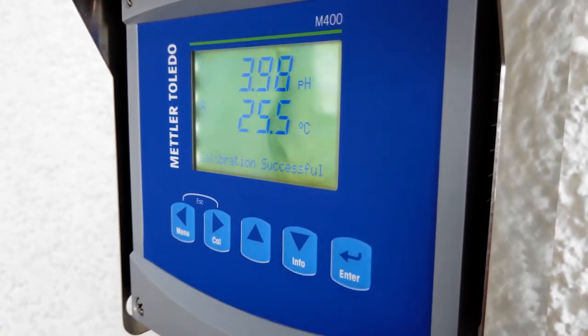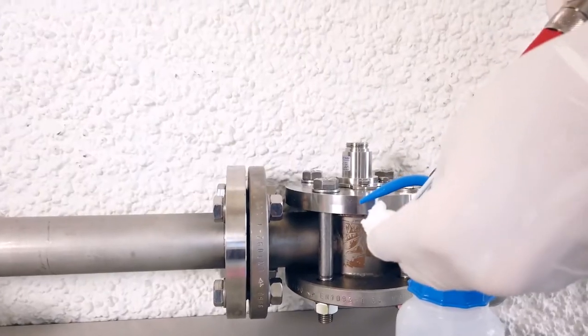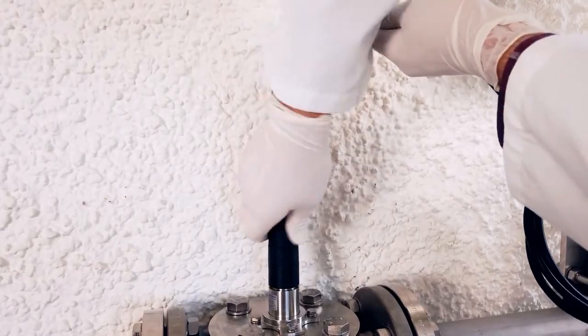You can now adjust the sensor by clicking enter. This saves the calibration data and stores the values for the zero point and slope on the transmitter. Now your sensor is calibrated successfully.